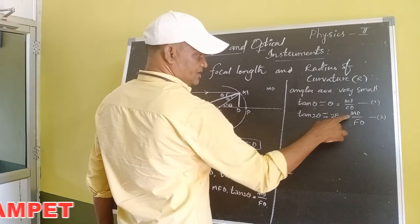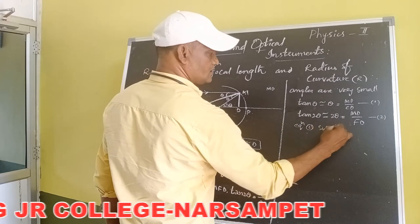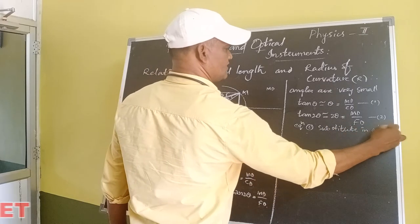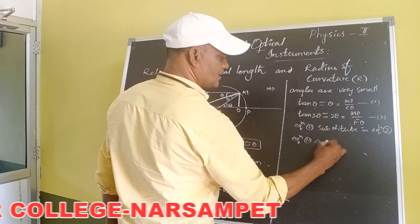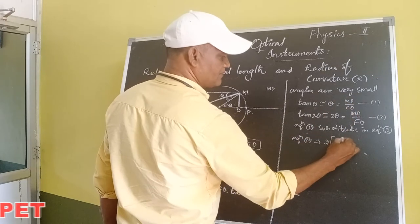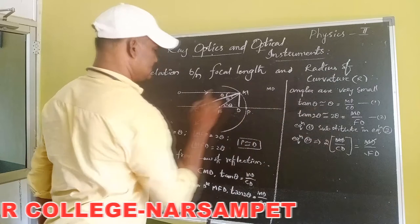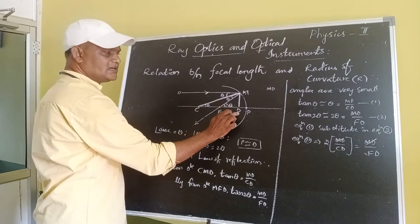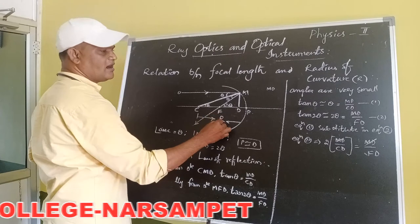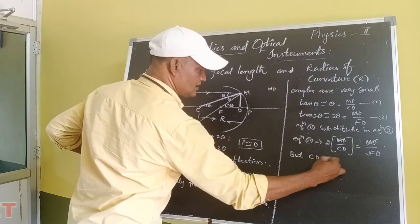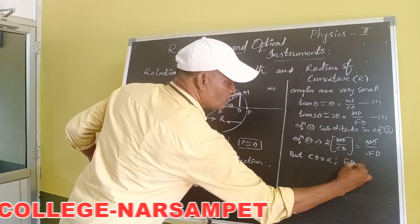Now substitute equation 1 into equation 2. Equation 2 gives 2 theta equals MD by FD. From equation 1, theta equals MD by CD. Substituting: 2 times (MD by CD) equals MD by FD. Here MD cancels from both sides. CD is the distance between the center of curvature and the pole of the mirror, which is the radius of curvature denoted by r. FD is the distance between the principal focus and the pole of the mirror, which is the focal length denoted by f.